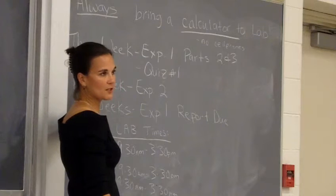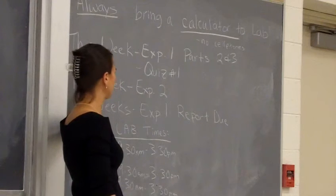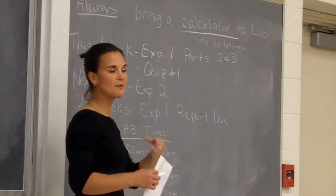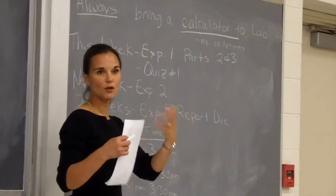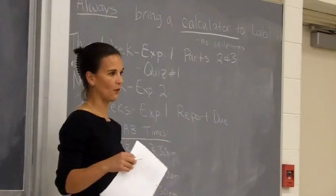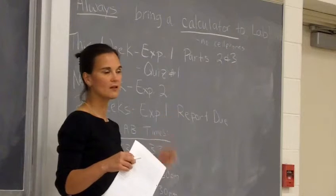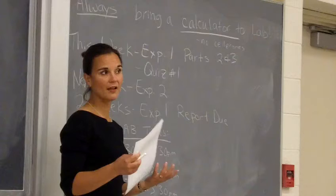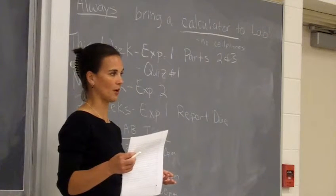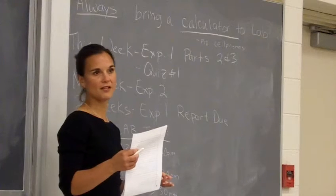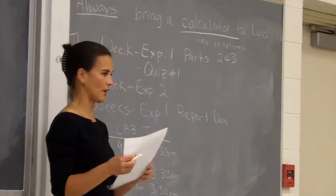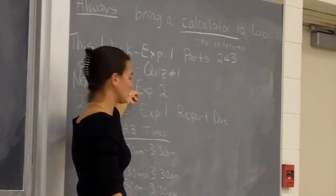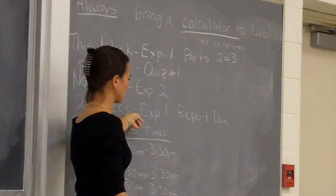This week we're going to finish up experiment one and you'll get your first quiz. The quiz is typically going to be over whatever you are doing in lab that week. This week's quiz has two weeks to pull information from — last week and this week — as well as any quiz could have safety information on it. That will be fair game throughout the semester. Next week we'll be doing experiment two, and in two weeks your first lab report is due — experiment one's lab report is due two weeks from either Tuesday or Thursday.